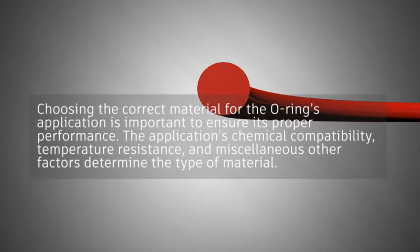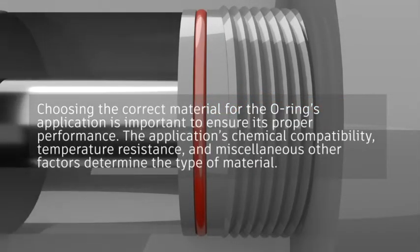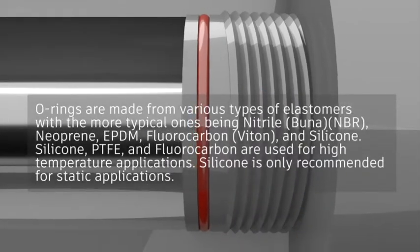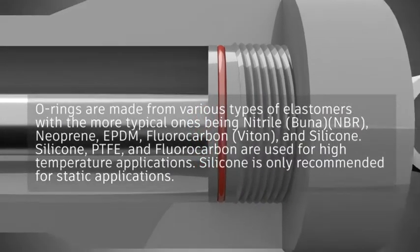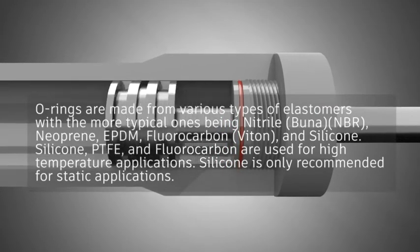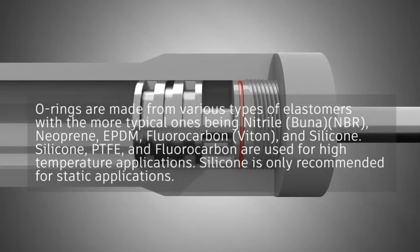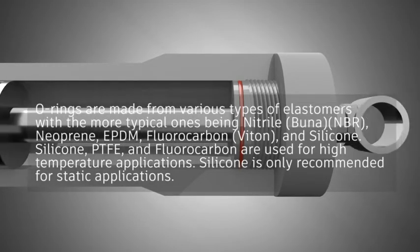Choosing the correct material for the O-Ring's application is important to ensure its proper performance. The application's chemical compatibility, temperature resistance, and miscellaneous other factors determine the type of material. O-Rings are made from various types of elastomers, with the more typical ones being nitrile, buna, NBR, neoprene, EPDM, fluorocarbon, viton, and silicone.